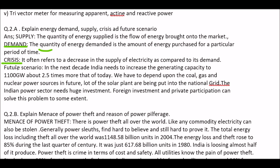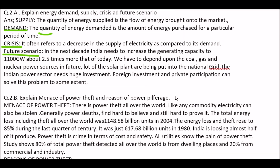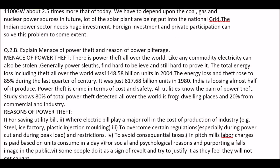Future scenario: in the next decade, India needs to increase its generating capacity to 1100 gigawatts — about 2.5 times more than today. We have to depend upon coal, gas, and nuclear power sources in the future. A lot of solar plants are being put into the national grid. The Indian power sector needs huge investment; foreign investment and private participation can solve this problem to some extent.